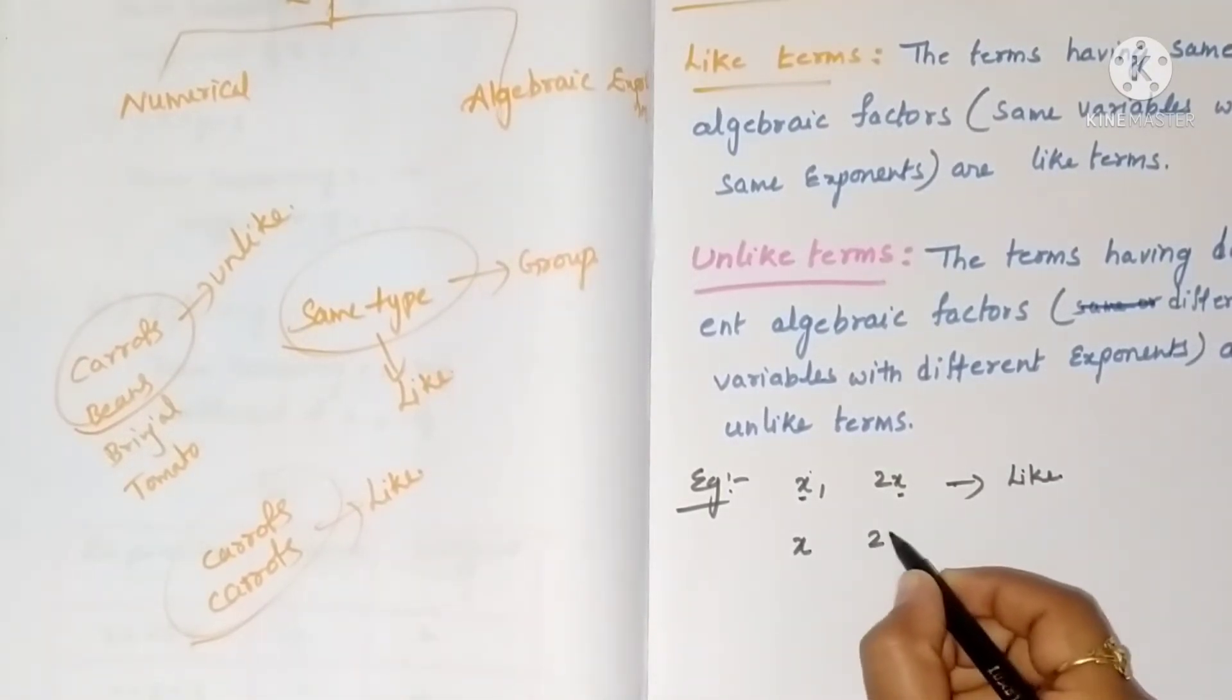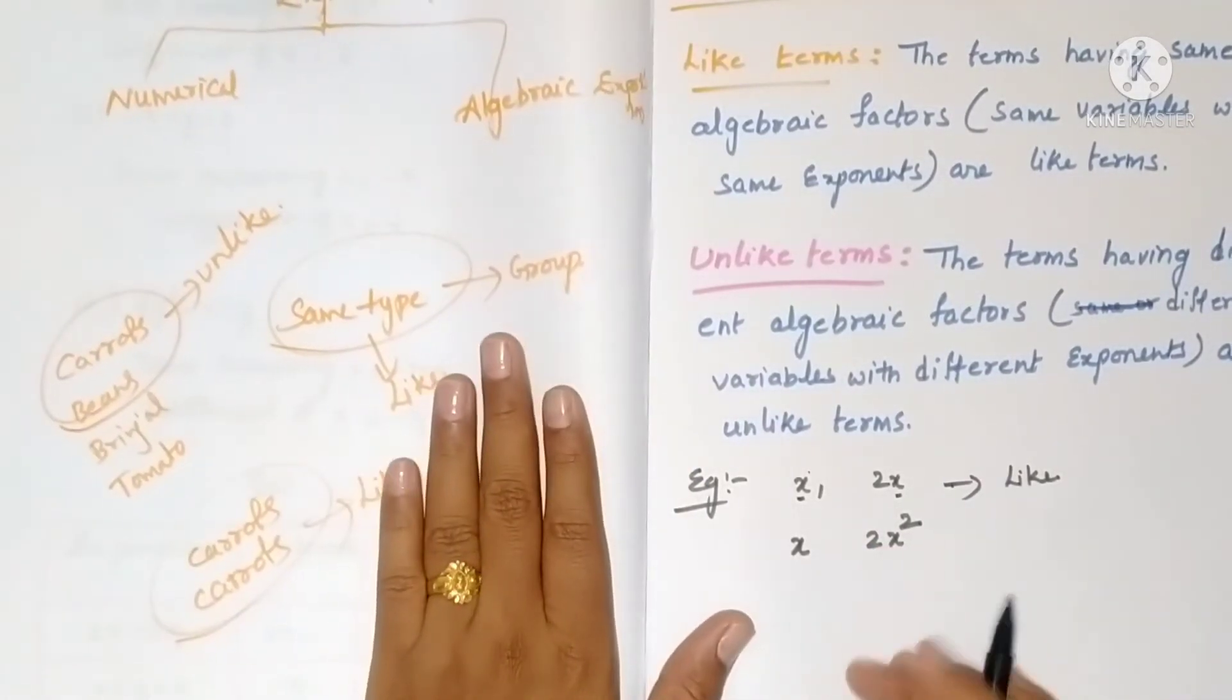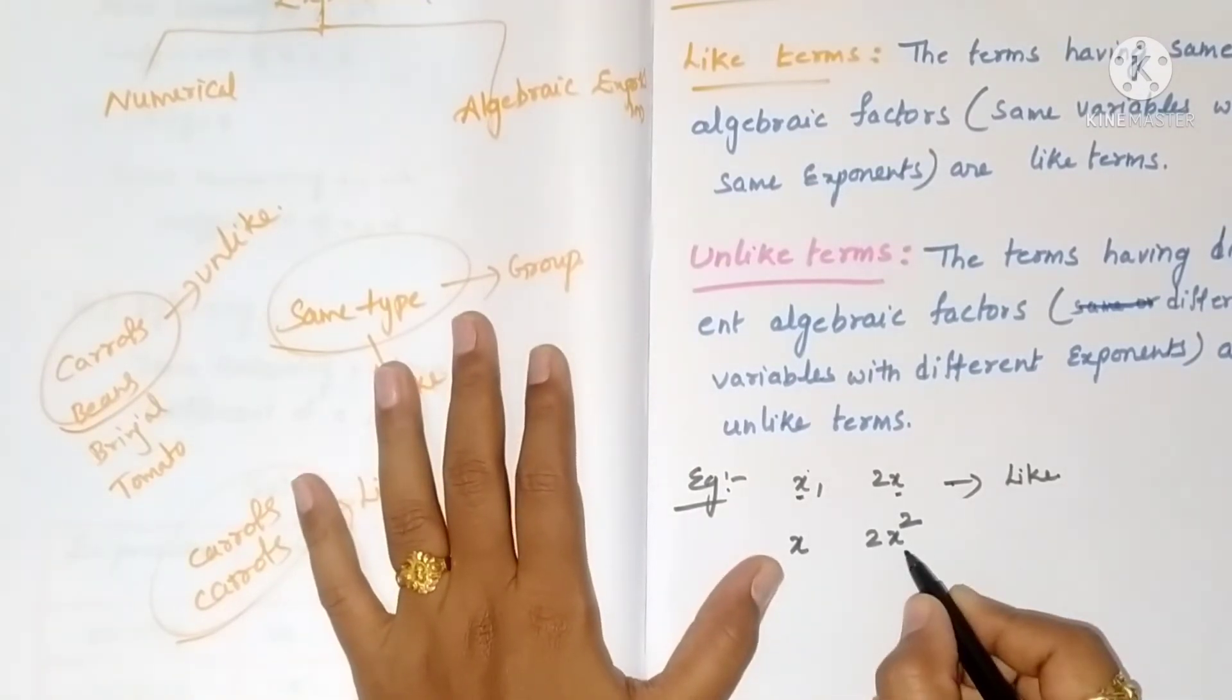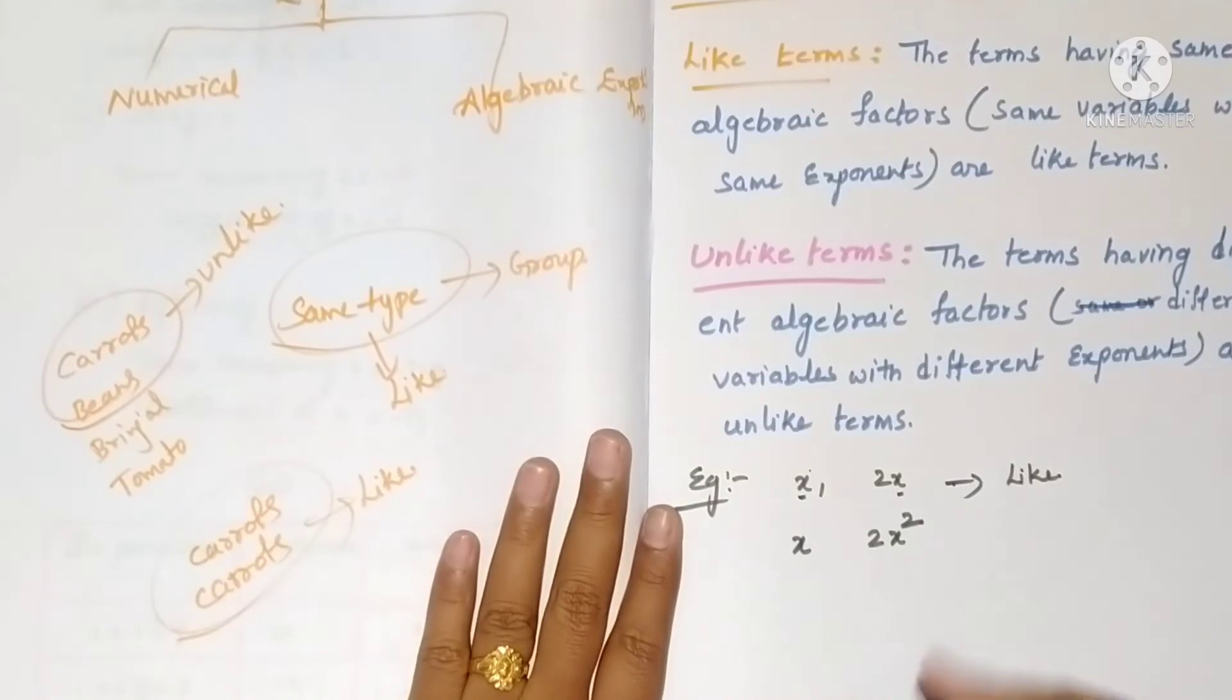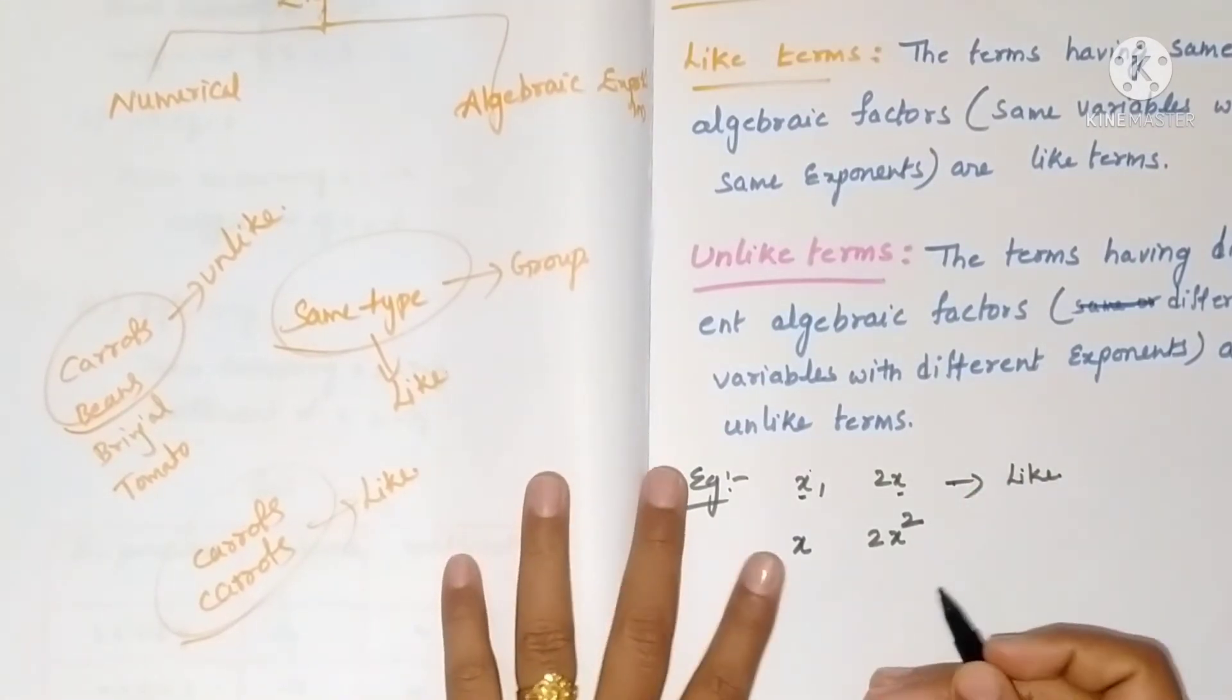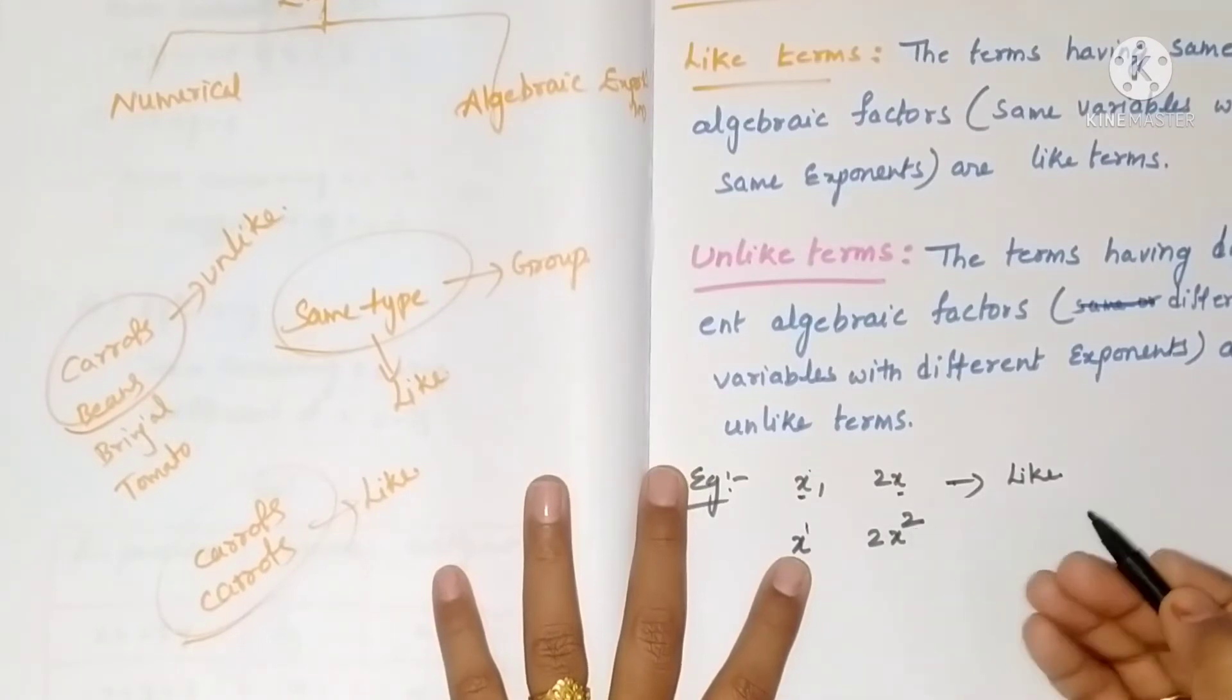Now x and 2x². Numbers don't matter. Look at the letters - x is there in both, and letters are also the same. Next, we have to consider the exponent: here it's one and this is two.